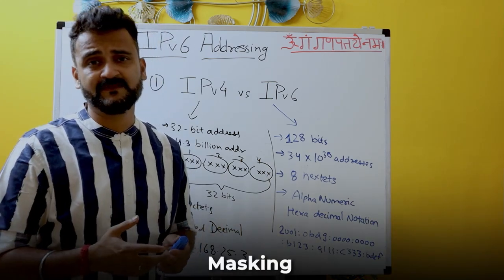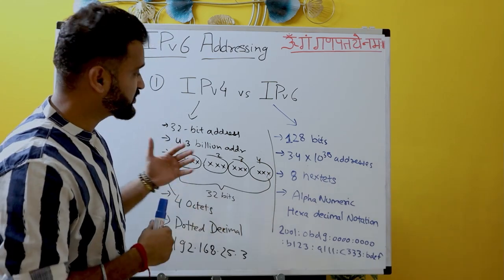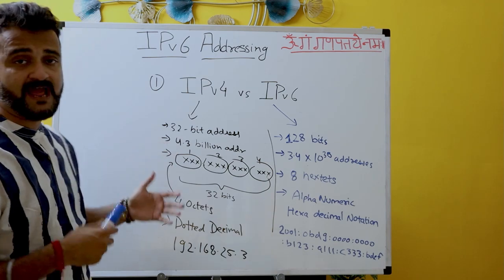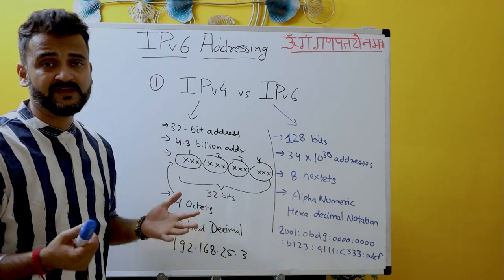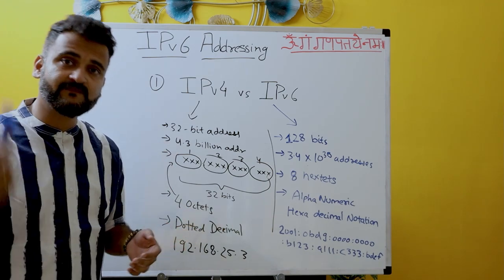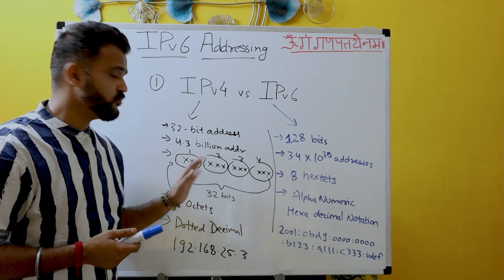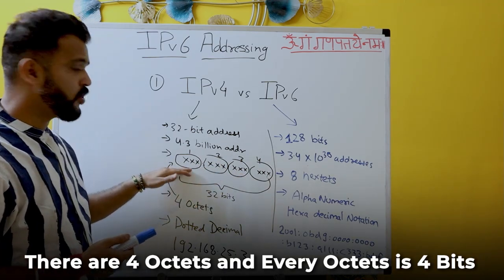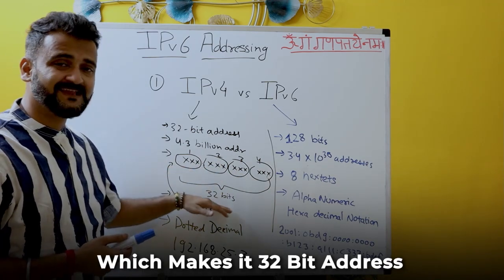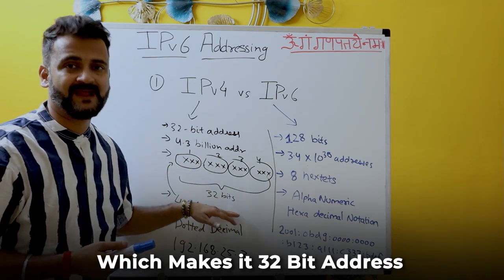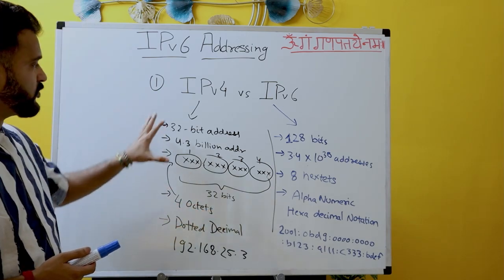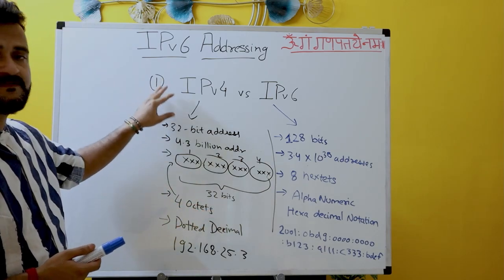We are still using IPv4 through various mechanisms — subnetting, masking, and NAT. IPv4 is still well in use, but it will get exhausted. Every octet is 8 bits, there are four octets, making it a 32-bit address overall. This is the basic structure of IPv4.